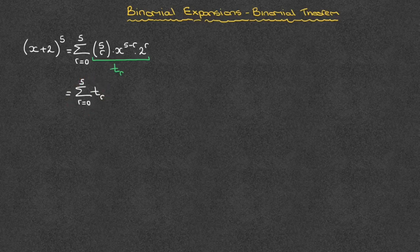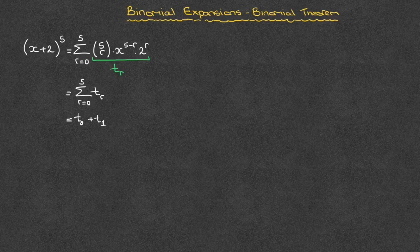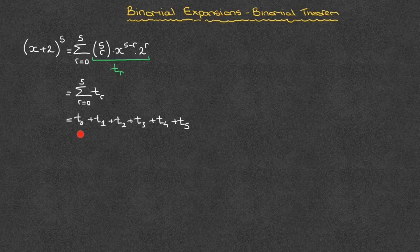This sum is telling us to add all of the terms we obtain by replacing r by all of the integer values between 0 up to 5 included. In other words, this is equal to t0 plus t1 plus t2 plus t3 plus t4 plus t5. To obtain each of these terms, we use the expression we have for our general term, underlined in green here.